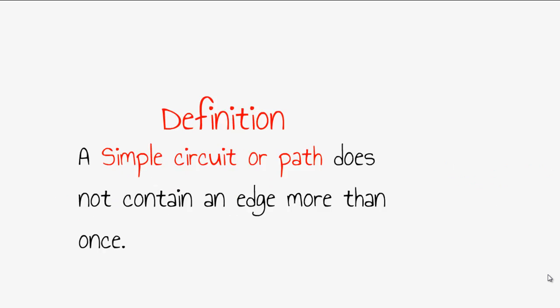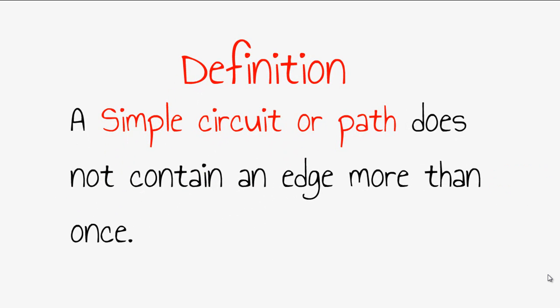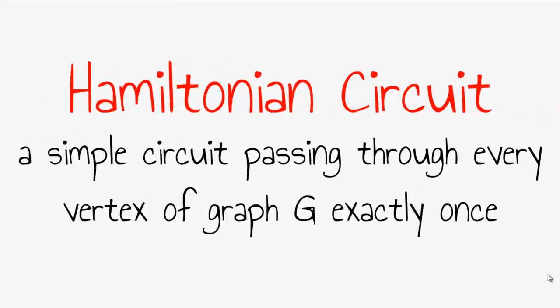Hamiltonian paths and circuits. A simple circuit or path does not contain an edge more than once. However, a Hamiltonian circuit is a simple circuit that passes through every vertex of a graph, such as graph G, exactly once.